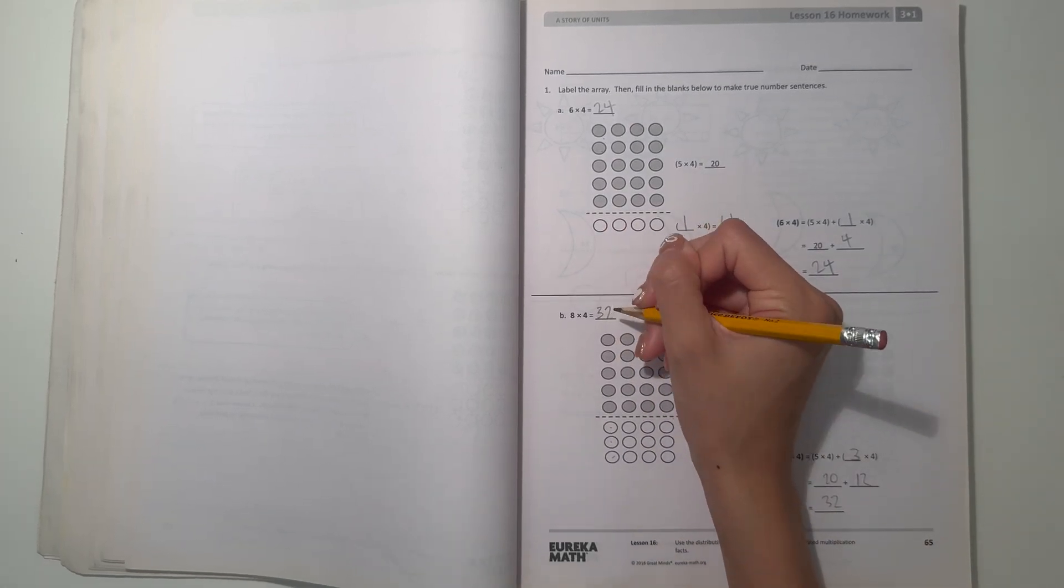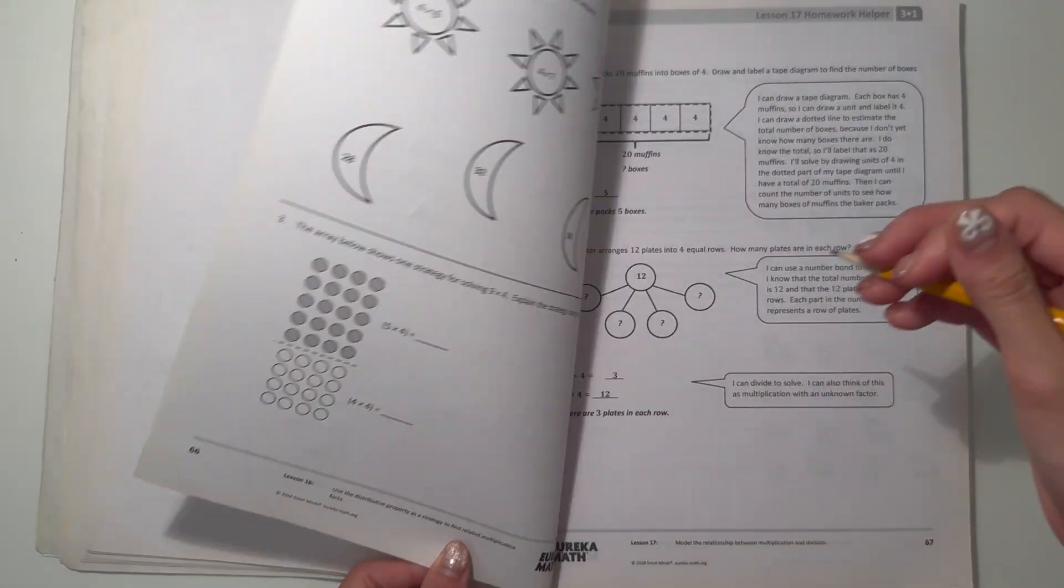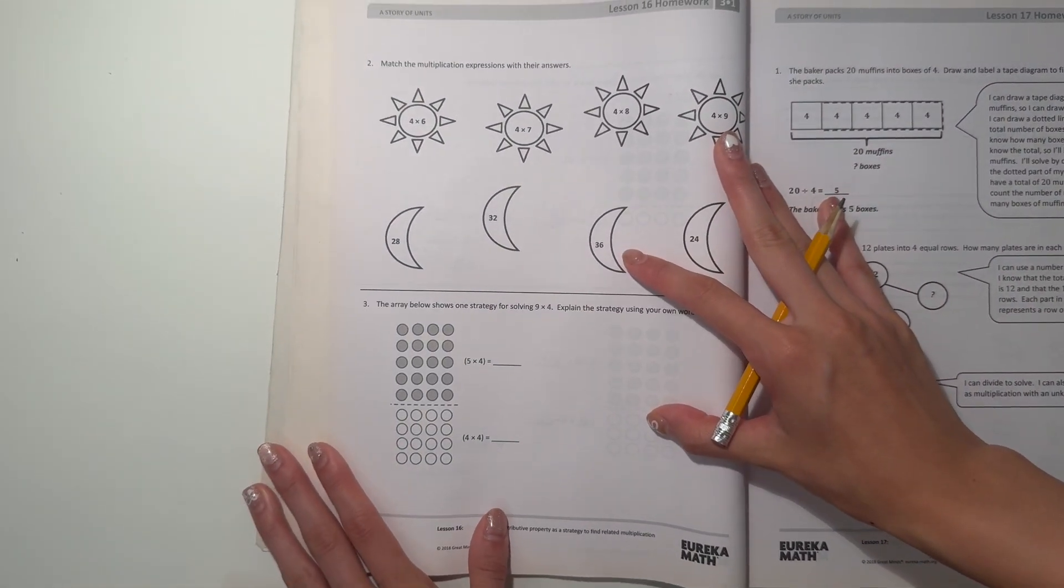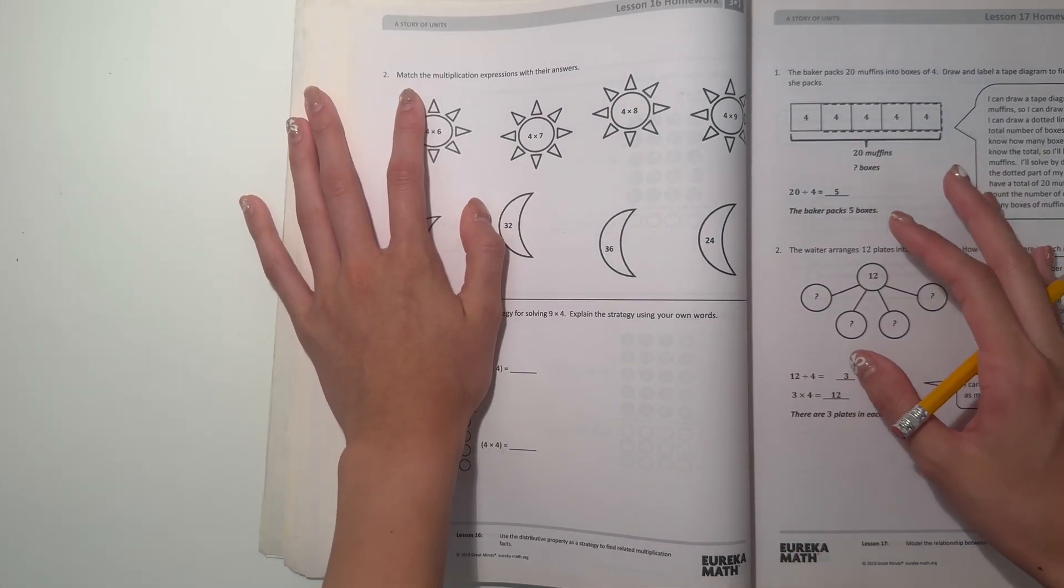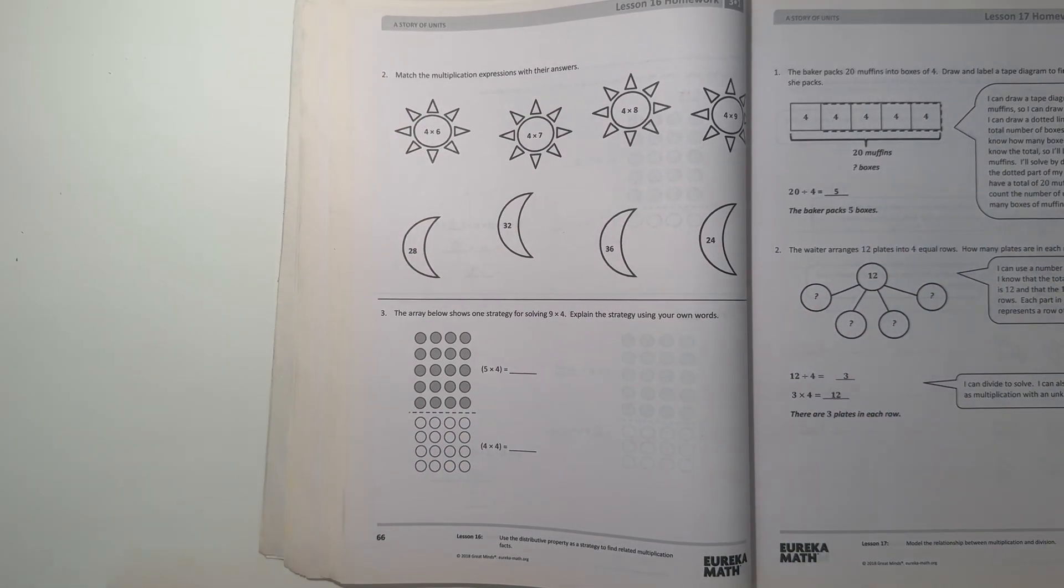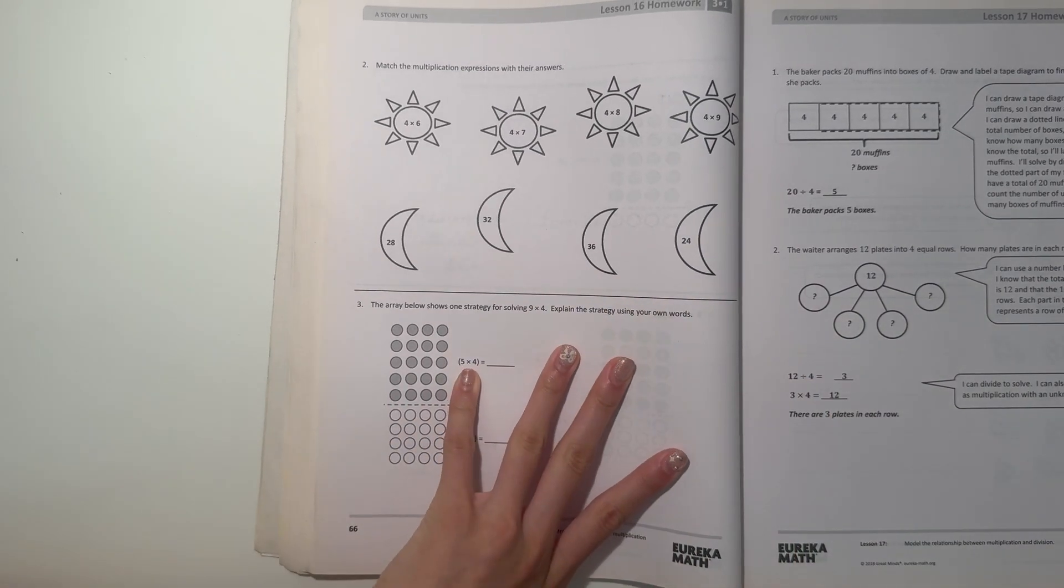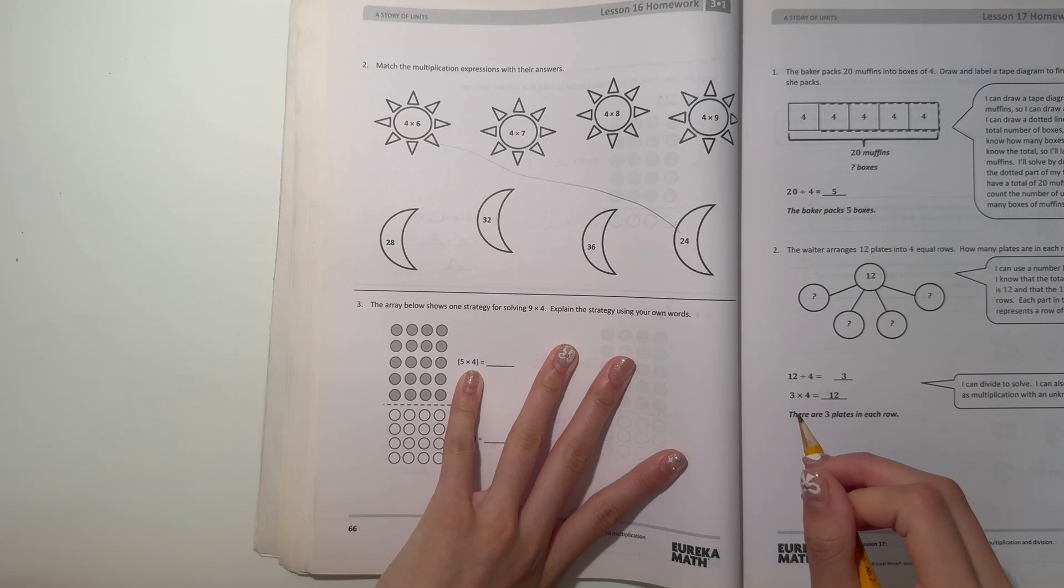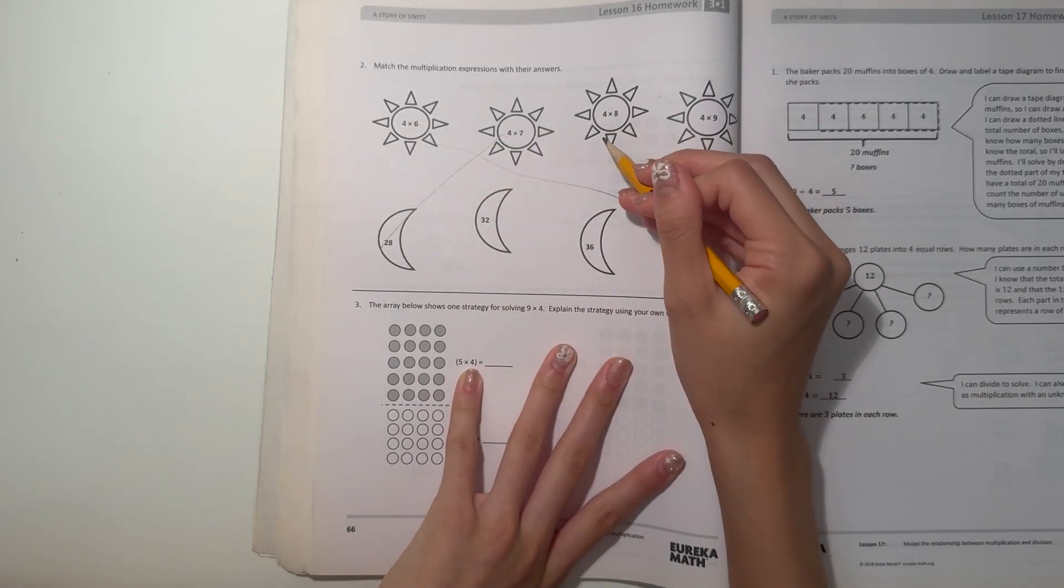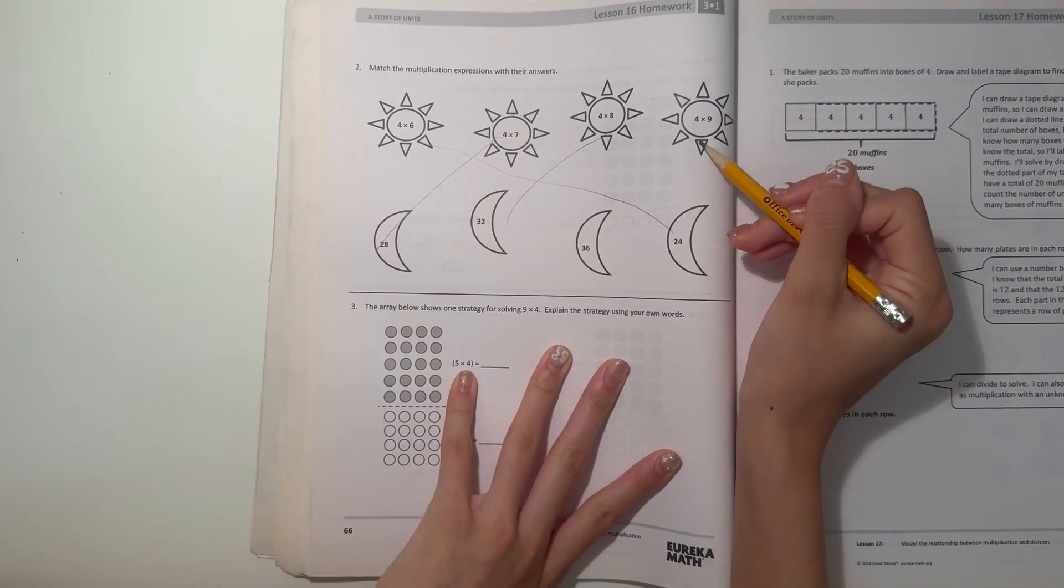Number two: match the multiplication expressions with their answers. Four times six is twenty four, four times seven is twenty eight, four times eight is thirty two, and four times nine is thirty six. Basic facts.